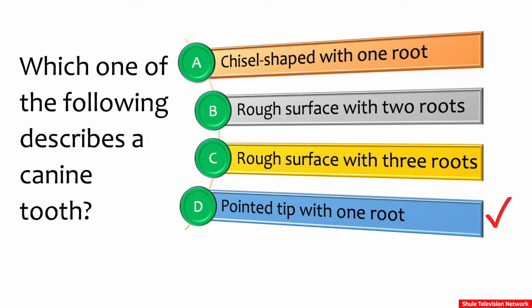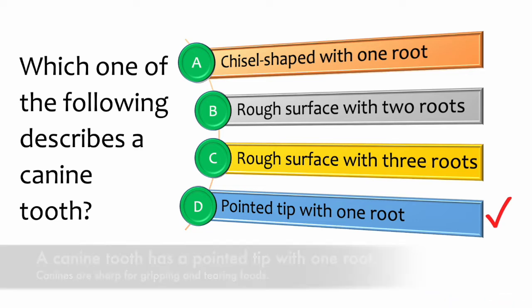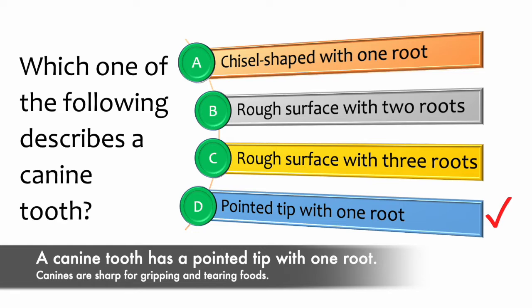D is correct. A canine tooth has a pointed tip with one root. Canines are sharp for gripping and tearing foods.